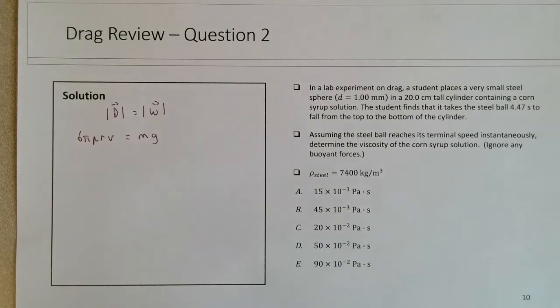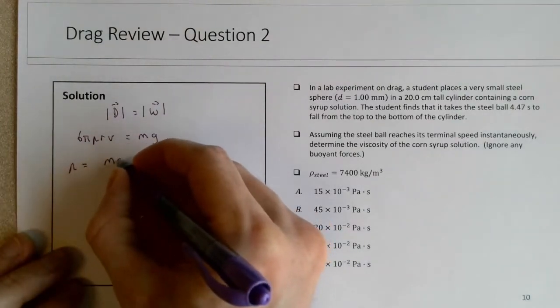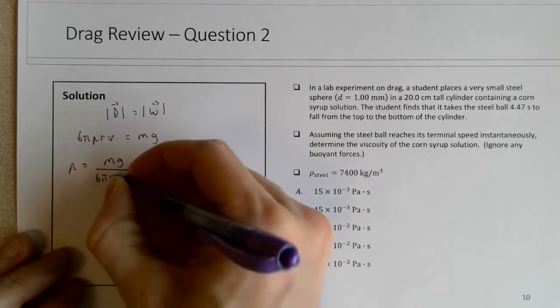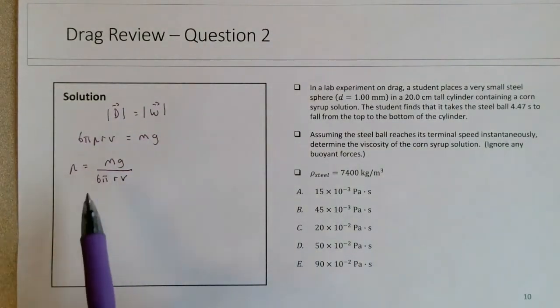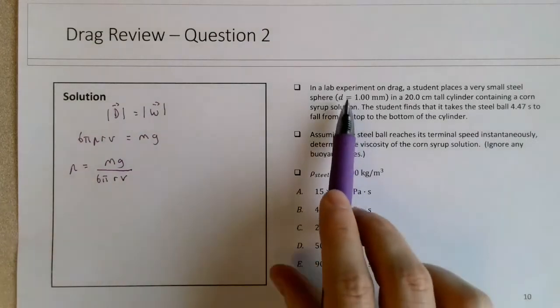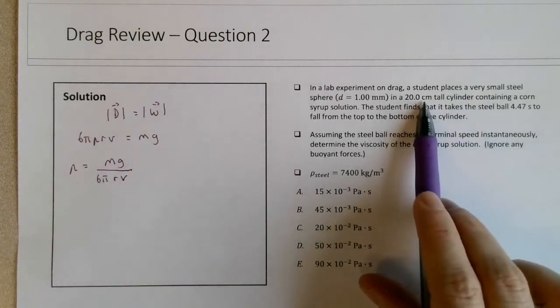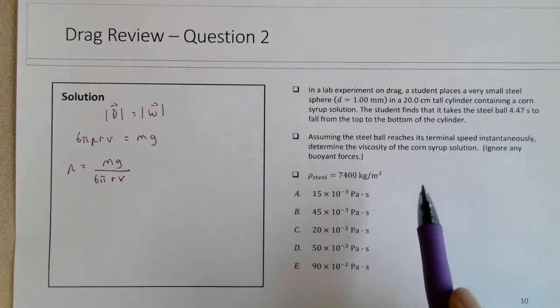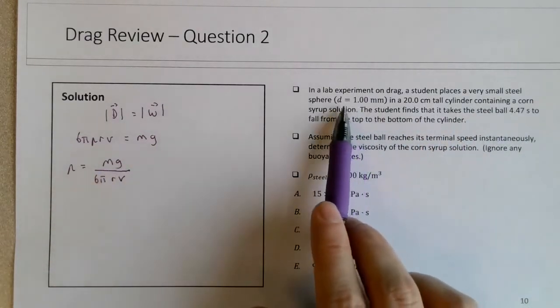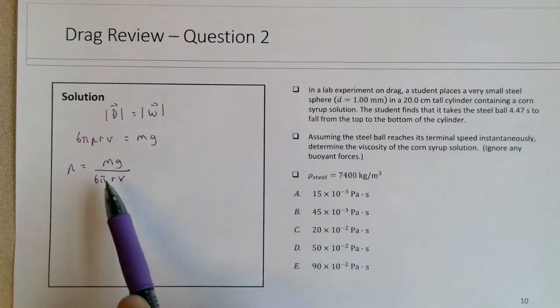So we're trying to find the viscosity of the corn syrup solution, so we're trying to isolate η here. So η would be equal to mg divided by 6πr times v. Let's think about what we have—of course g, 6π are all constants. We have the diameter, so we can figure out the radius, and the speed we have from the distance traveled and the time taken, assuming it's moving at a constant terminal speed. The mass we can figure out from the geometry of the sphere and the density, so we can solve for all these three quantities.